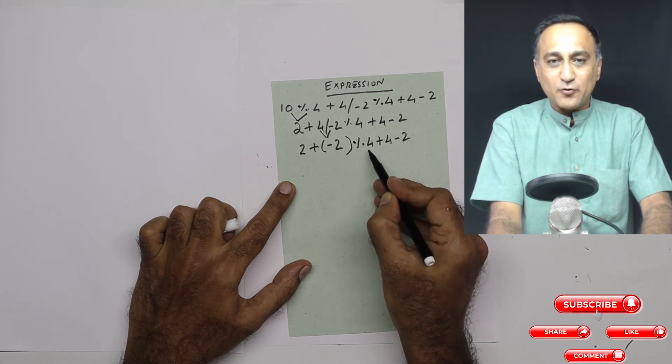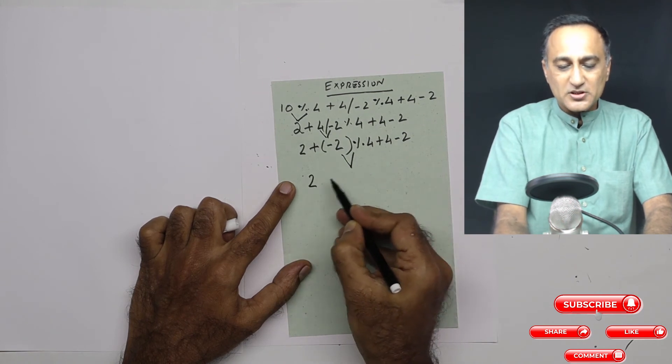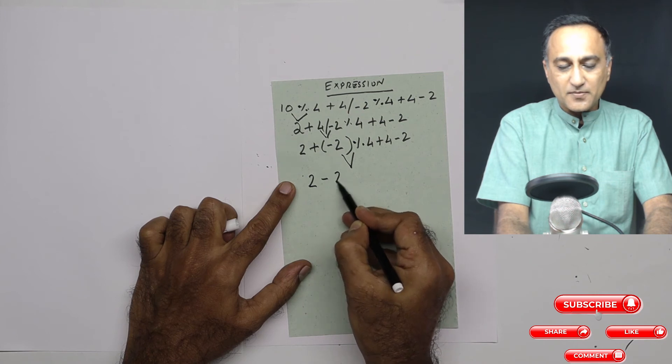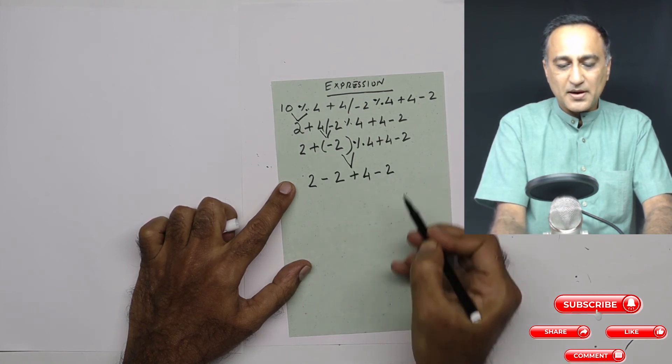Since minus 2 is less than 4, it is not going to be able to divide by 4. So it is going to simply come across as minus 2 here. The remainder is going to be minus 2. This is going to be plus 4, and this is going to be minus 2.